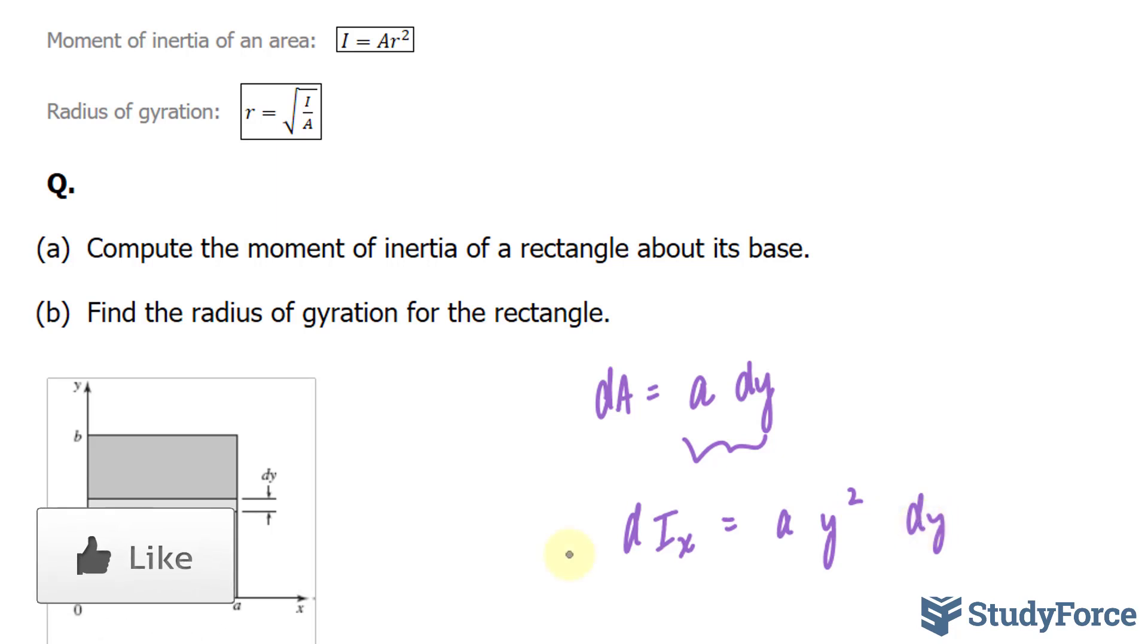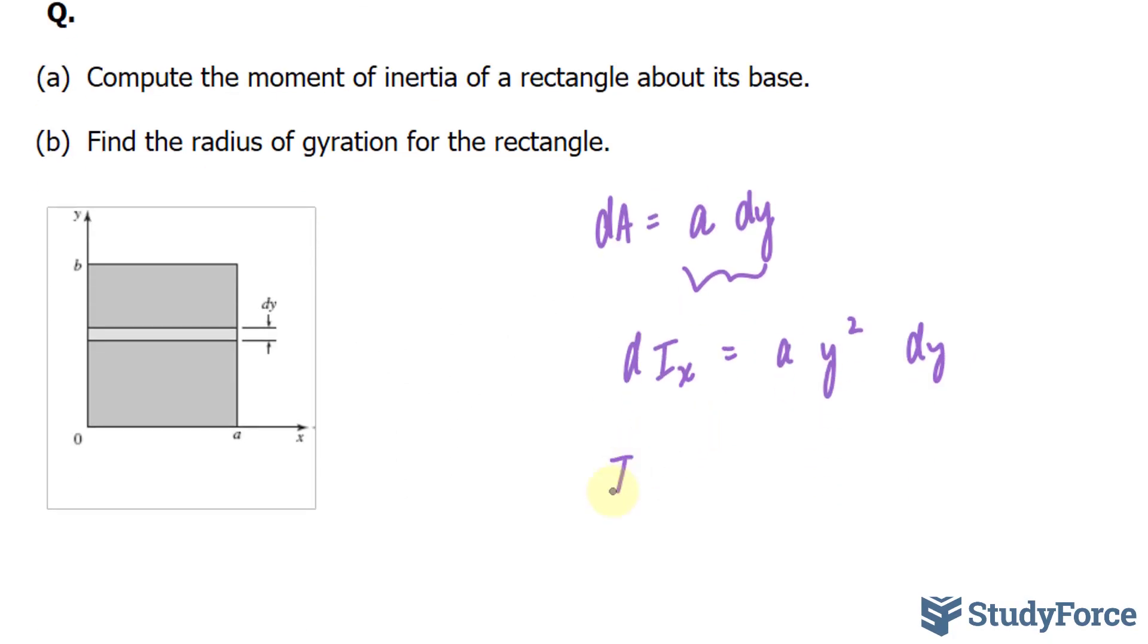Now, to compute the moment of inertia, what we have to do is take the integral of this function. So by taking the integral, I end up with Ix is equal to A is a constant, times the integral between 0 and b, the length of this rectangle, y to the power of 2 dy.